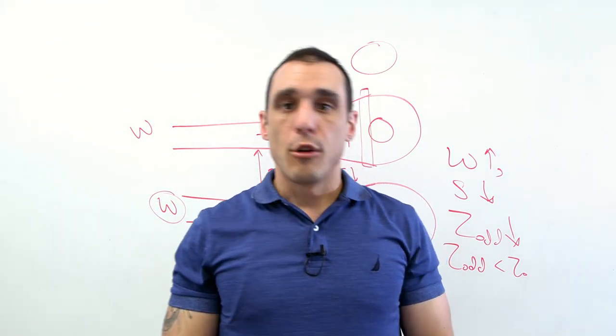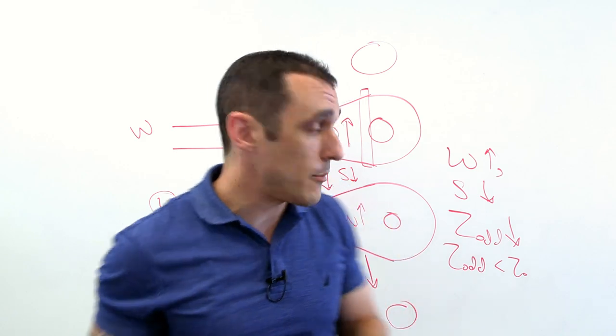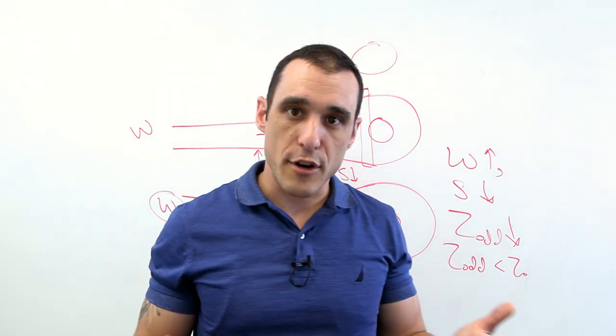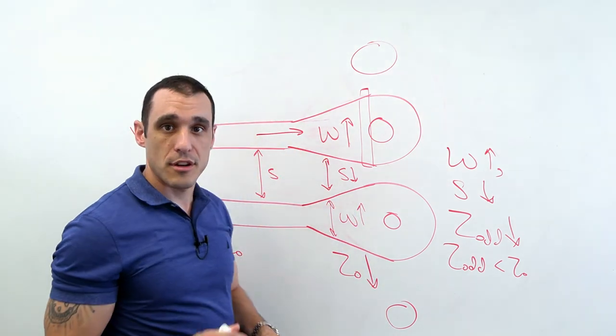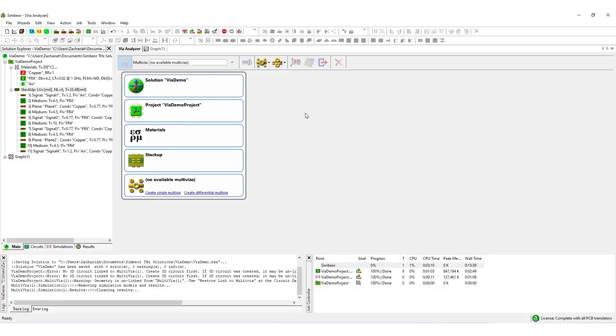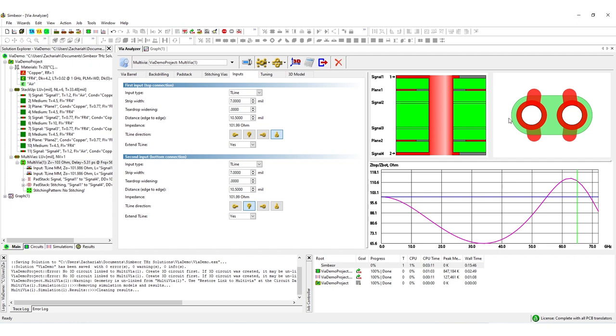To investigate that, we're going to jump on to Symbior. Symbior is a really great program for investigating this stuff because first of all, it's not very expensive, it's very highly accurate, and it is very specifically designed for simulating these types of structures. So let's go ahead and take a look. What we want to do now inside of Symbior is to create a differential via structure. So here we have a couple of differential pairs coming into this pair of vias. We're using just as an example, a six layer stack up. We could change that stack up if we want to, but just for fun, we're just going to use this example six layer stack up. And we want to see what happens when we start adding in teardrops on these different layers.